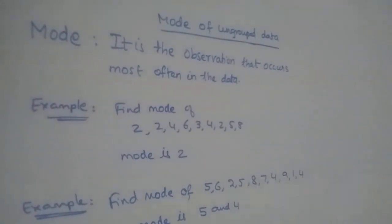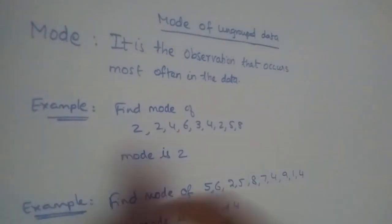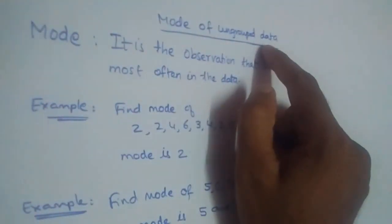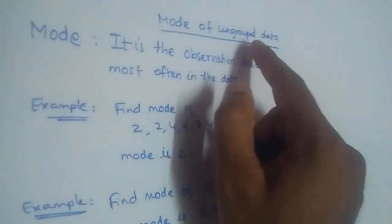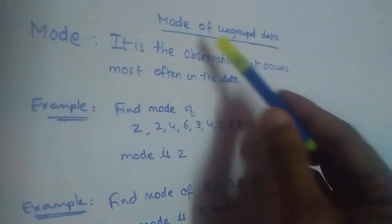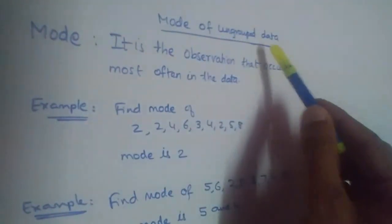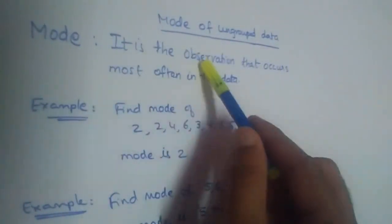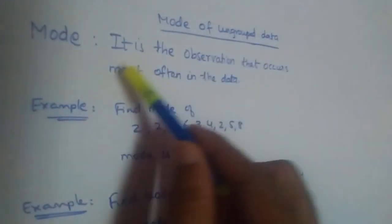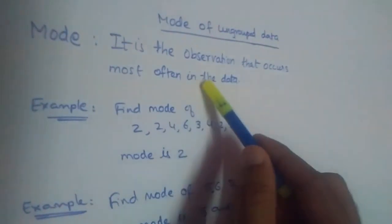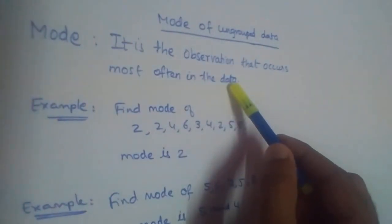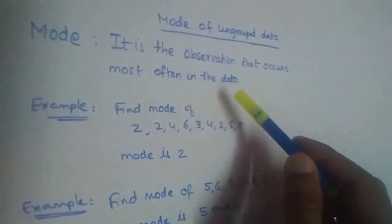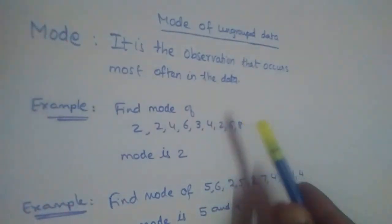In this video we will learn about mode of ungrouped data. The definition of mode is the observation that occurs most often in the data — the observation which occurs most frequently is the mode.